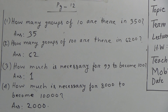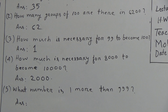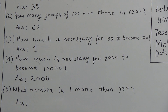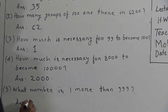Now we will solve question 5: what number is 1 more than 999? That means the next number of 999. If we add 1 with 999, then we get the answer. The next number of 999 is 1000. So the answer will be 1000.